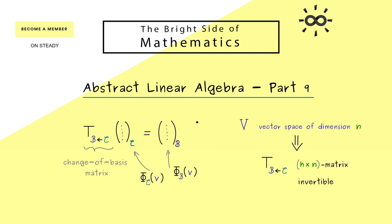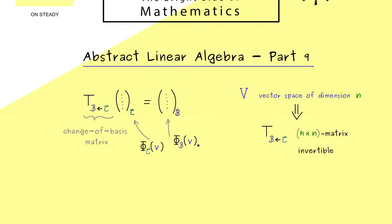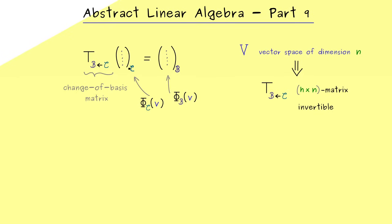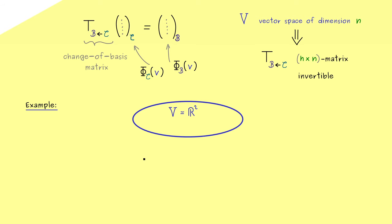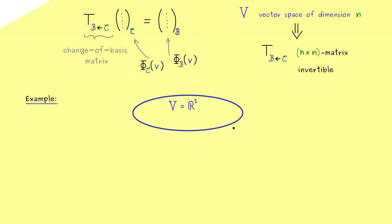Ok and now in this video, we will look at a very concrete example for such a change of basis matrix. Indeed it's a very common one and you can always use it if you want to change the basis in R^n. This means, in our picture here, the abstract vector space V is now given by R^2. And at this point you might argue, it's not needed to have this abstract picture here, because the vector space is already given by the very concrete one R^2.